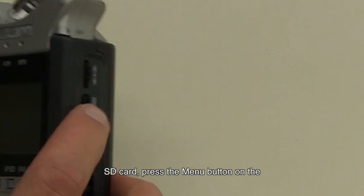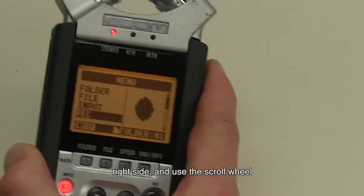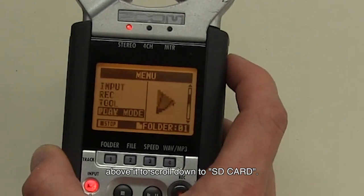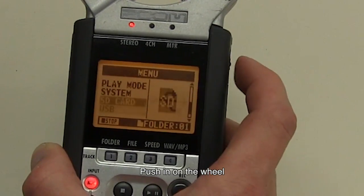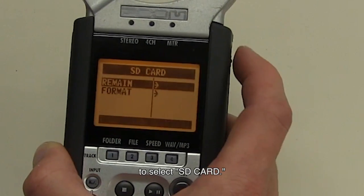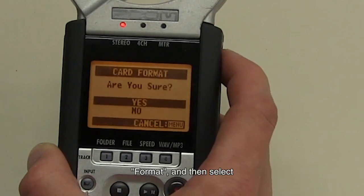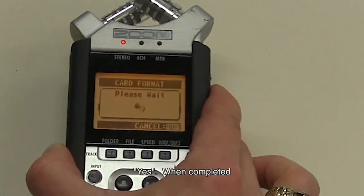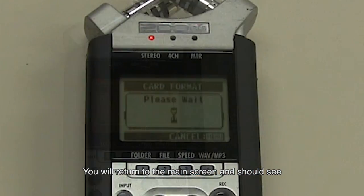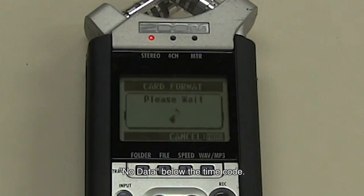To format the SD card, press the menu button on the right side and use the scroll wheel above it to scroll down to SD card. Push in on the wheel to select SD card, then scroll to and select format and then select yes. When completed, you will return to the main screen and should see no data below the timecode.